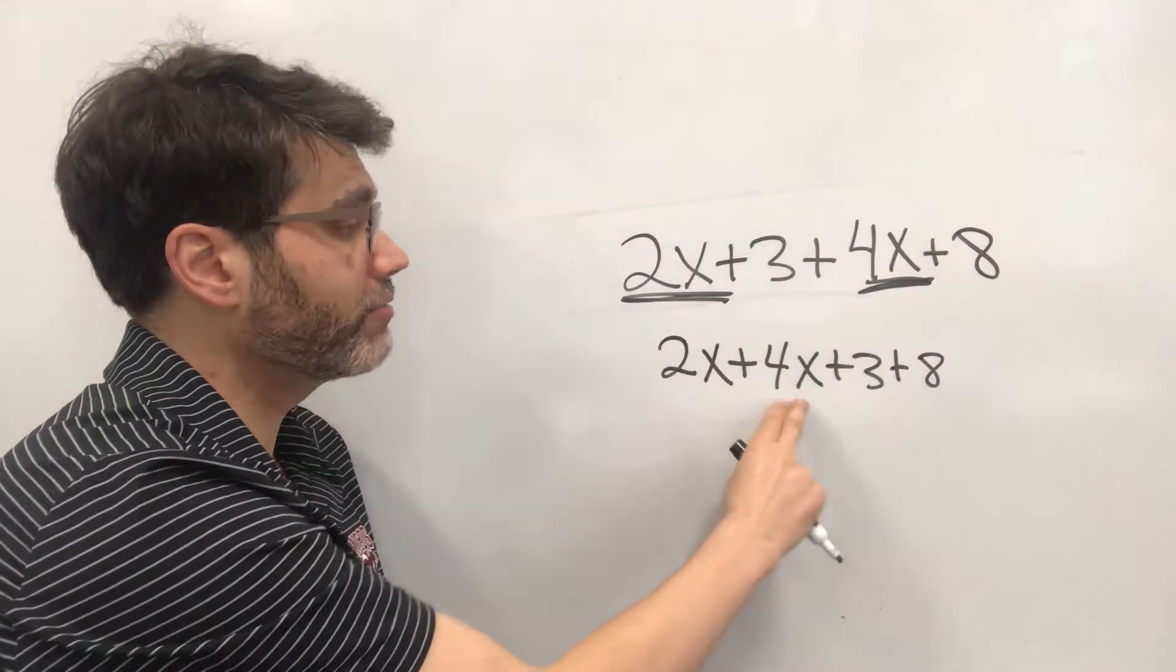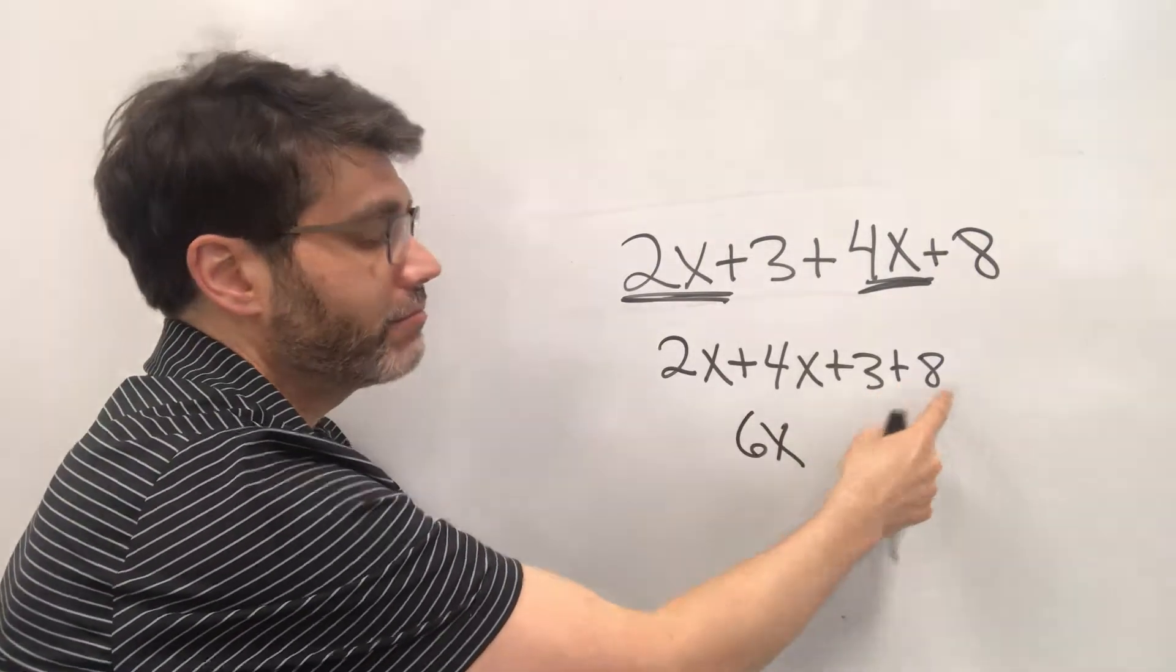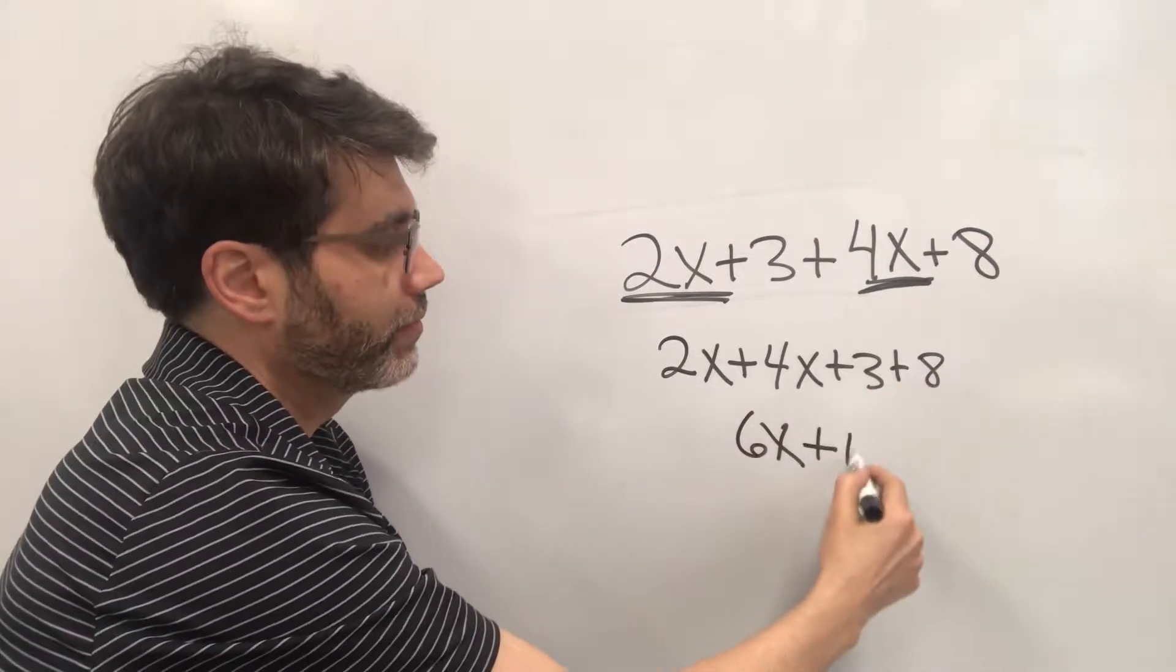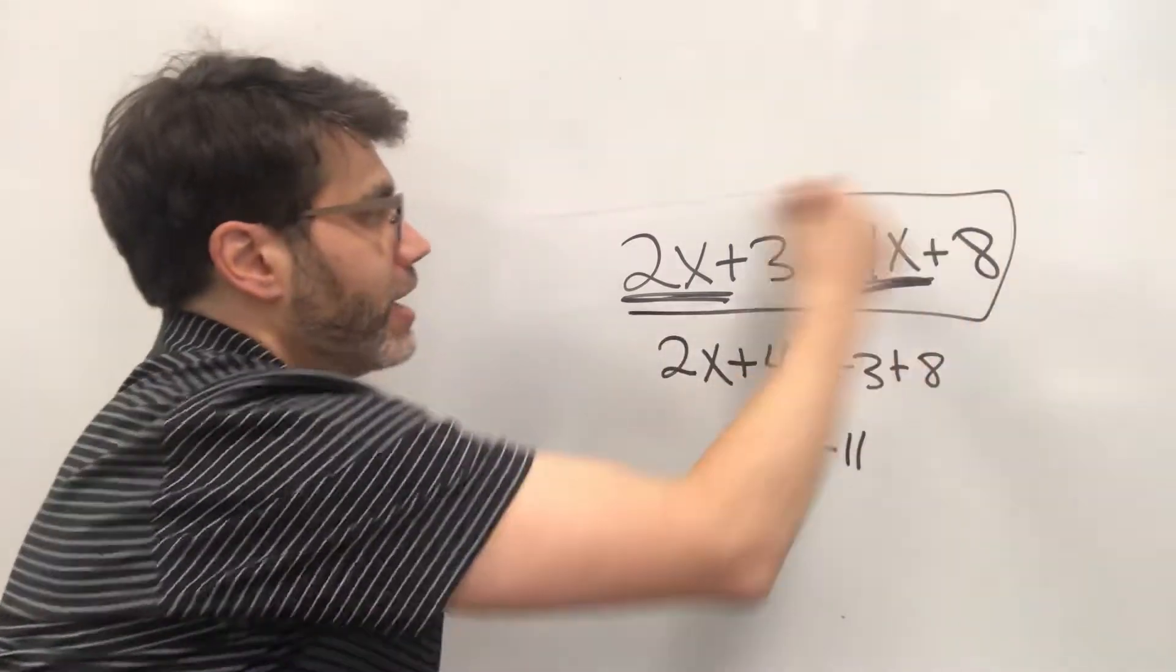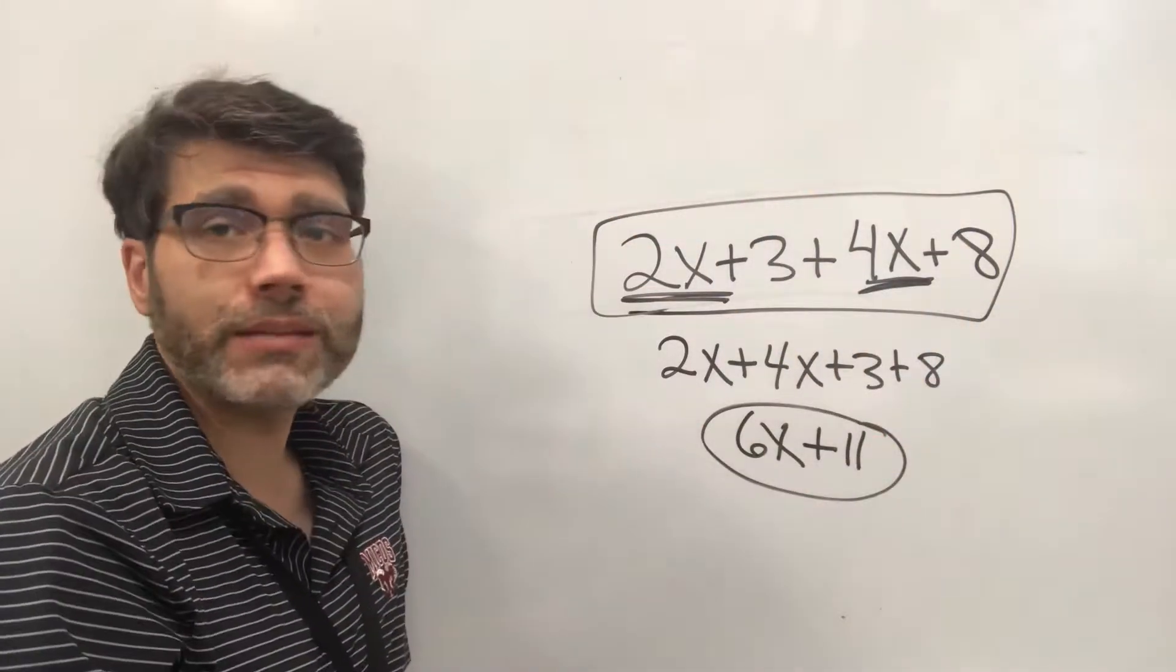So if you have 2x's and 4x's you're gonna have 6x's. And then if you have a 3 and an 8 that gets you 11. So this simplifies down to 6x plus 11. It cannot be simplified anymore.